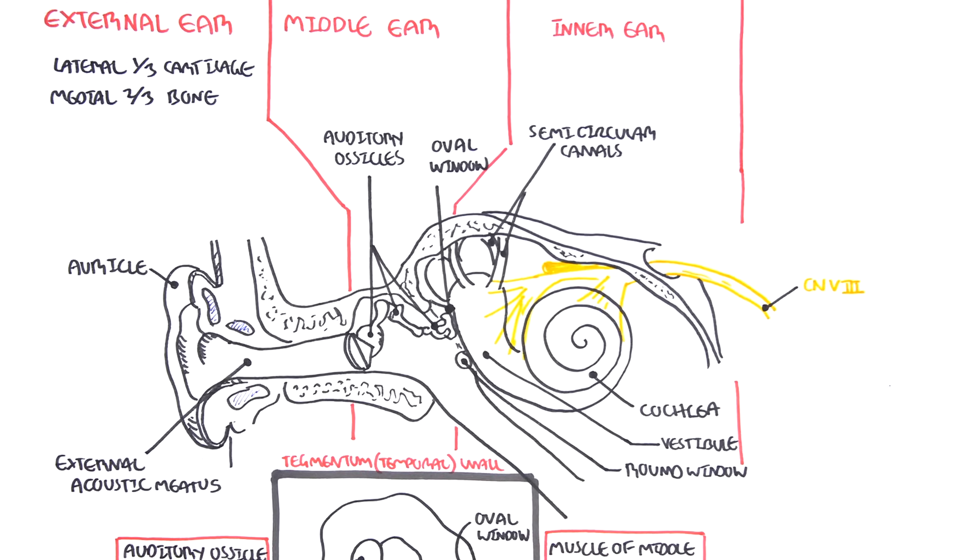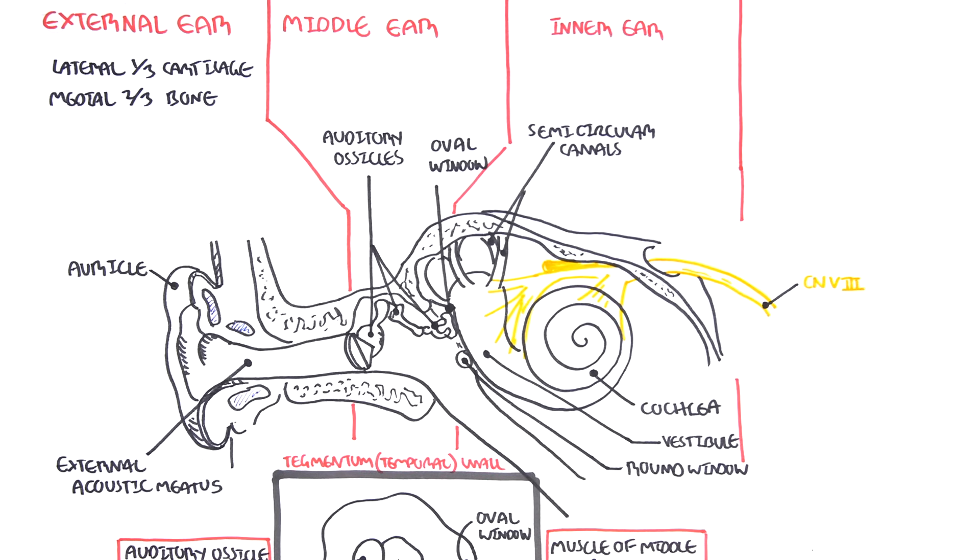Cranial nerve 8, the vestibulocochlear nerve, passes through a small opening in the bone here called the internal acoustic meatus. And the nerve goes towards the pons of the brain.